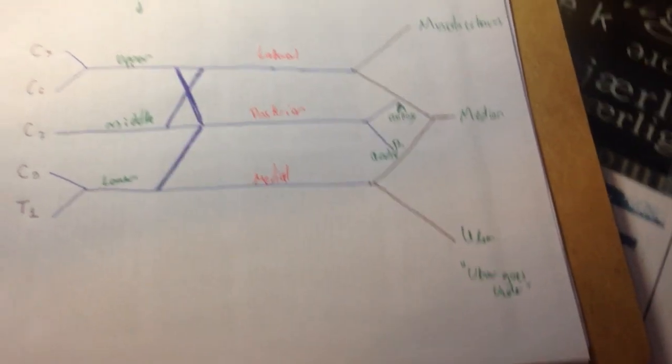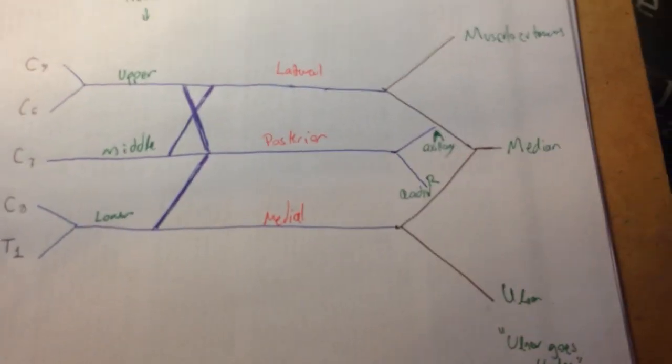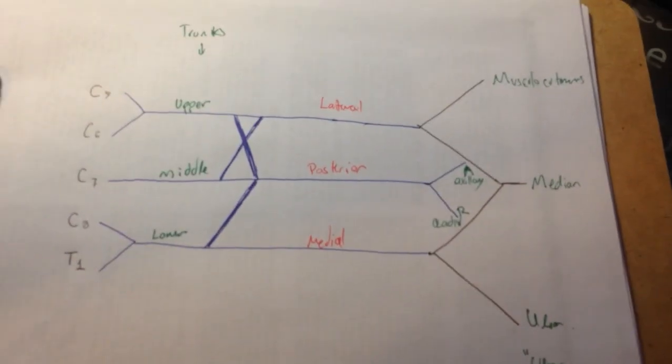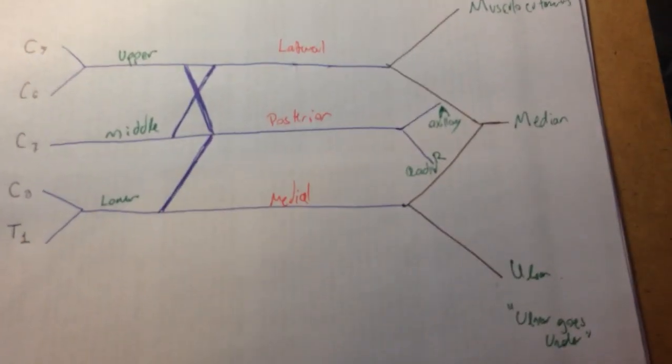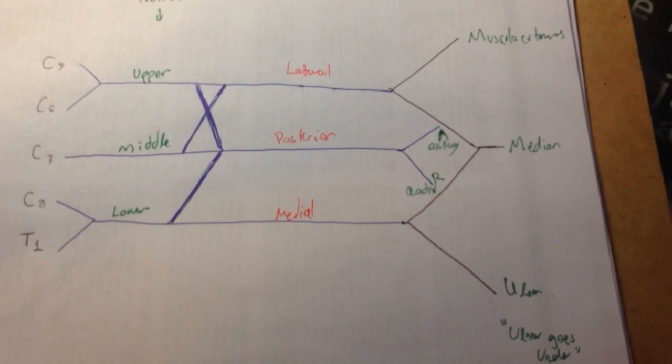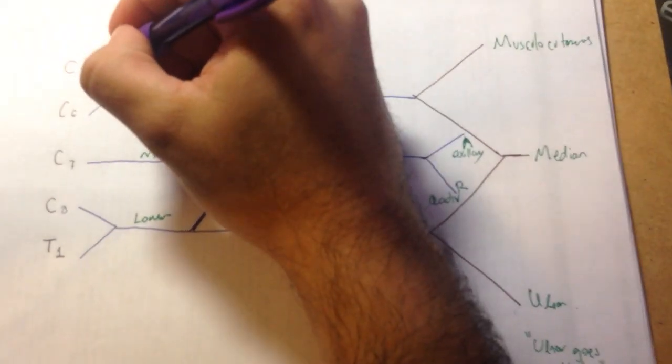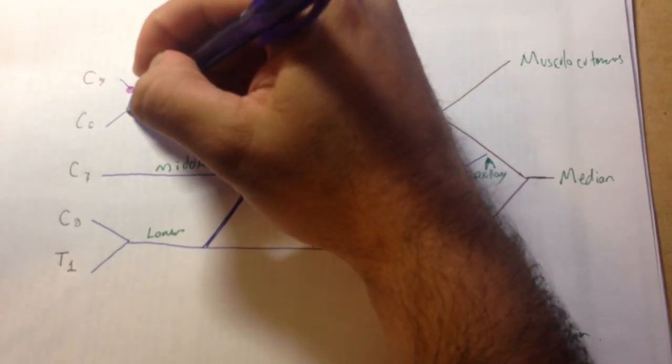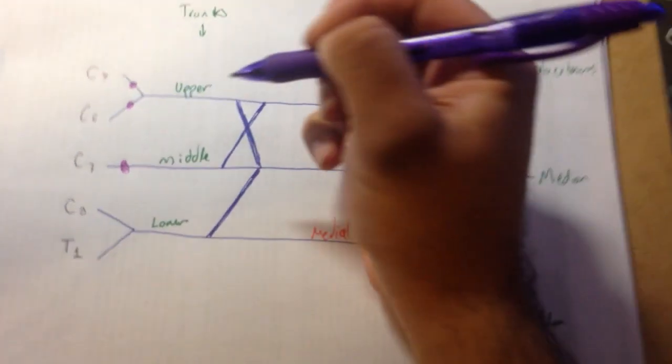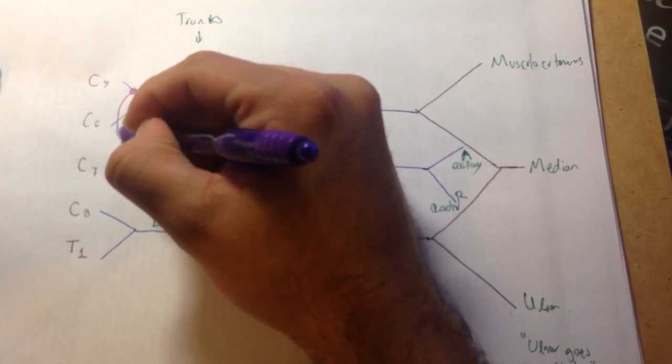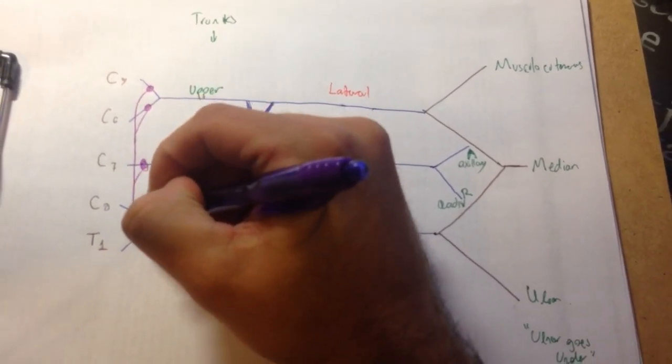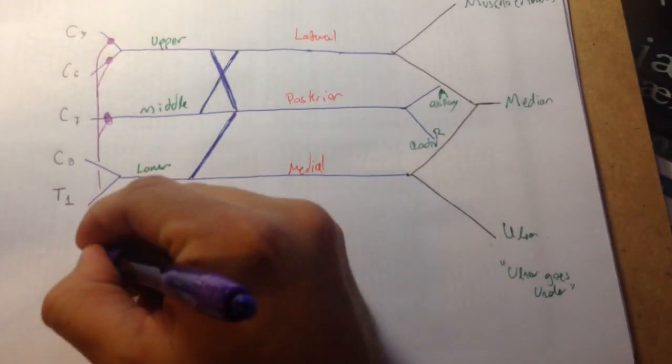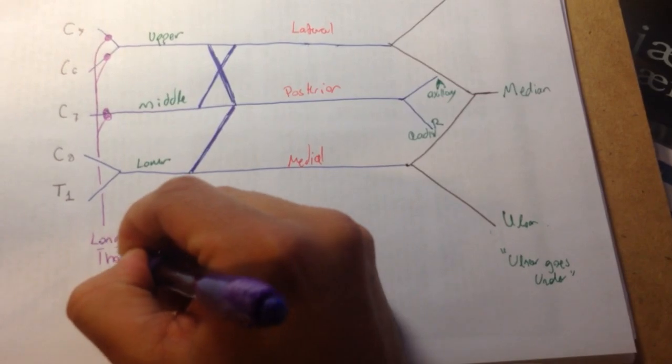Finally, there is one more nerve that we need to account or that we need to draw here. It's going to be the long thoracic nerve. Long thoracic nerve has components from the C5, C6, and C7 roots. So, we're going to draw it like this. C5, C6, and C7. I'm going to draw it just like this. Like that. Like that. Like that. And it's going to have nothing from C8 and T1. This is going to be long thoracic.